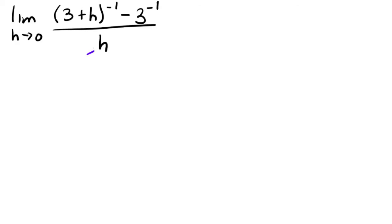Okay, so in this problem, let's try our usual plugging in zero. So notice that on top, you get three to the negative one minus three to the negative one, which is zero over zero. So this is indeterminate form. Okay, so we've got to do some more work.